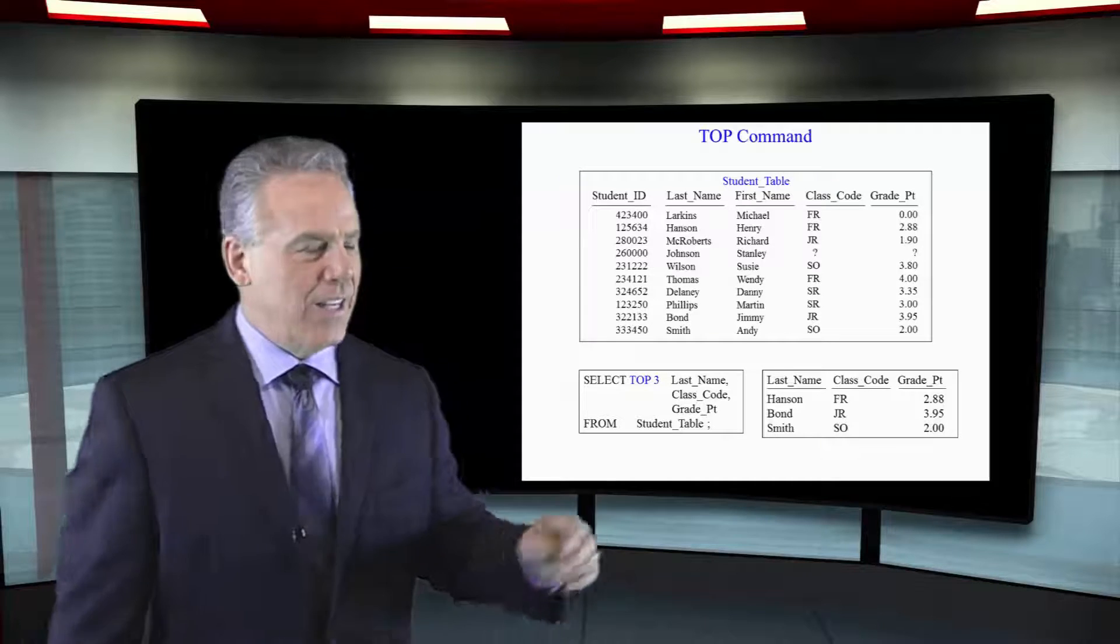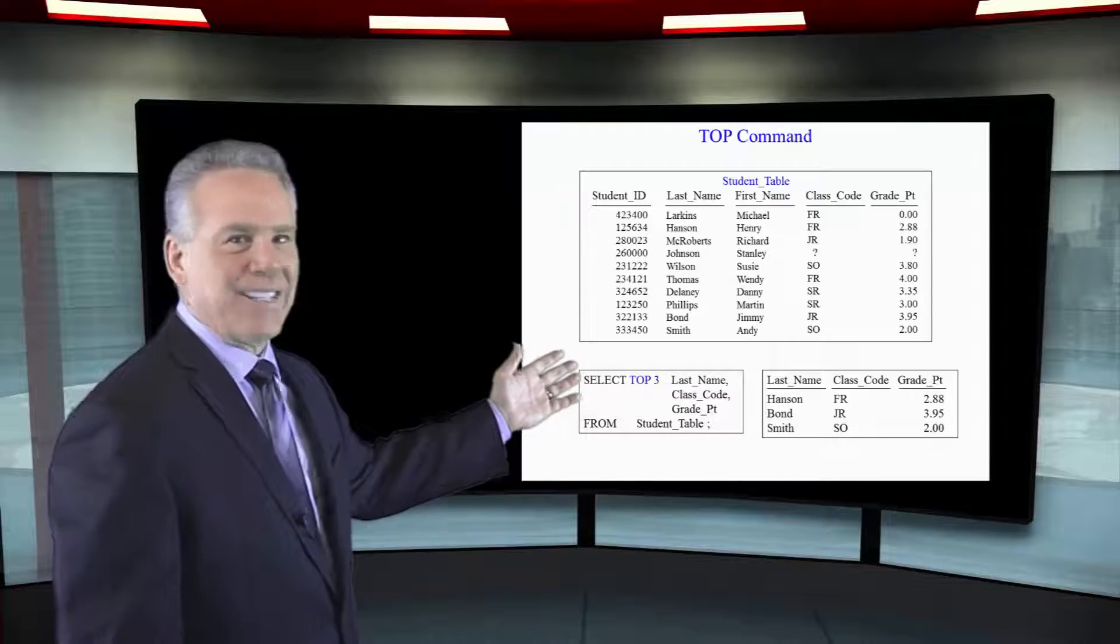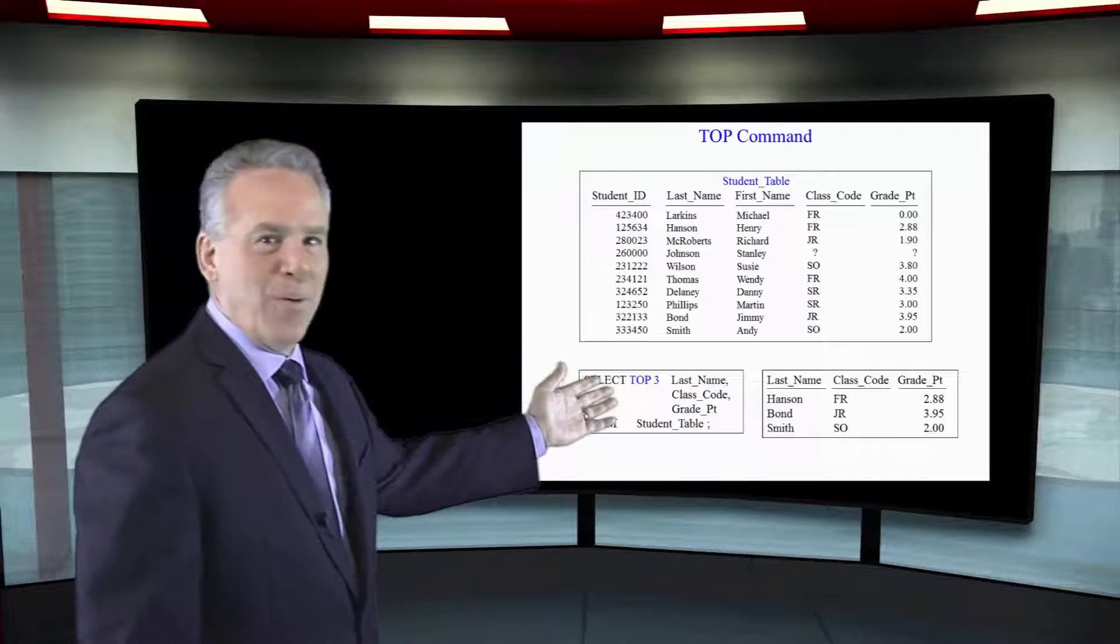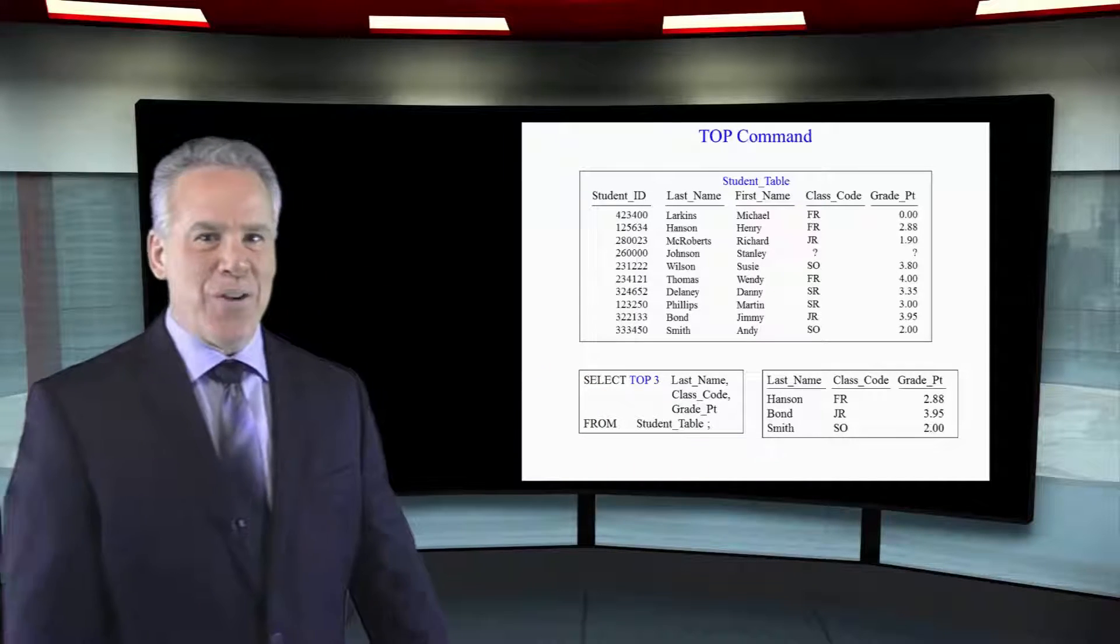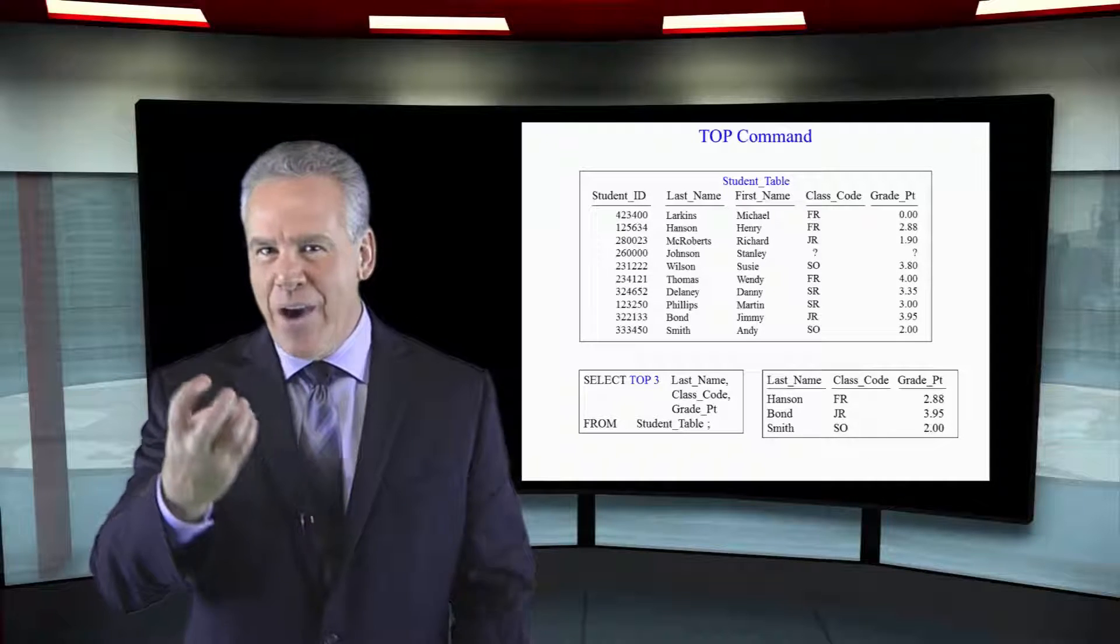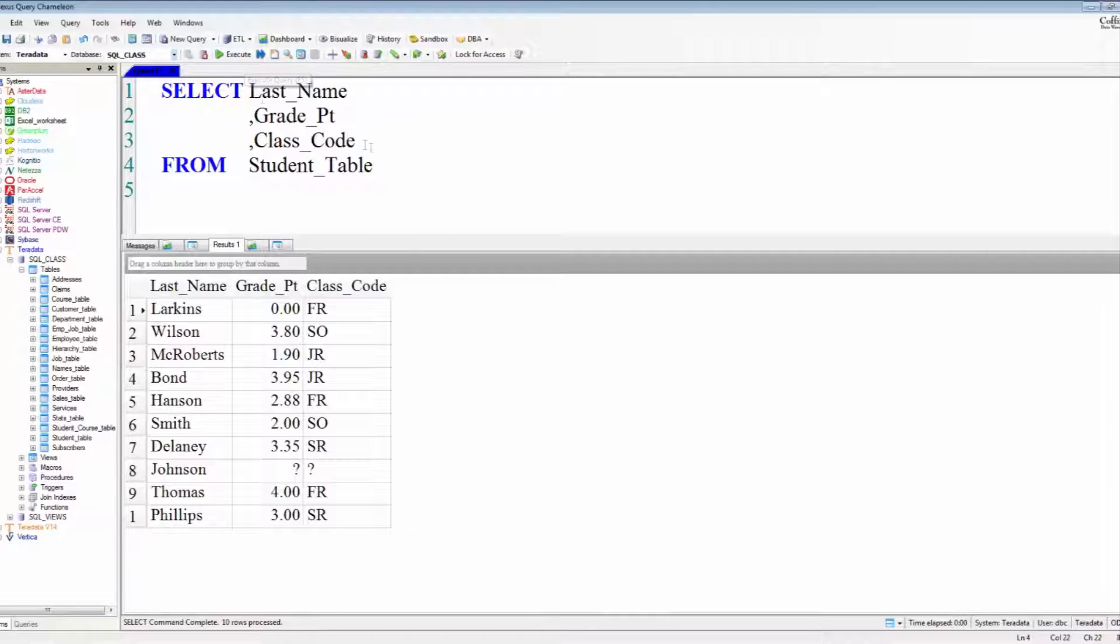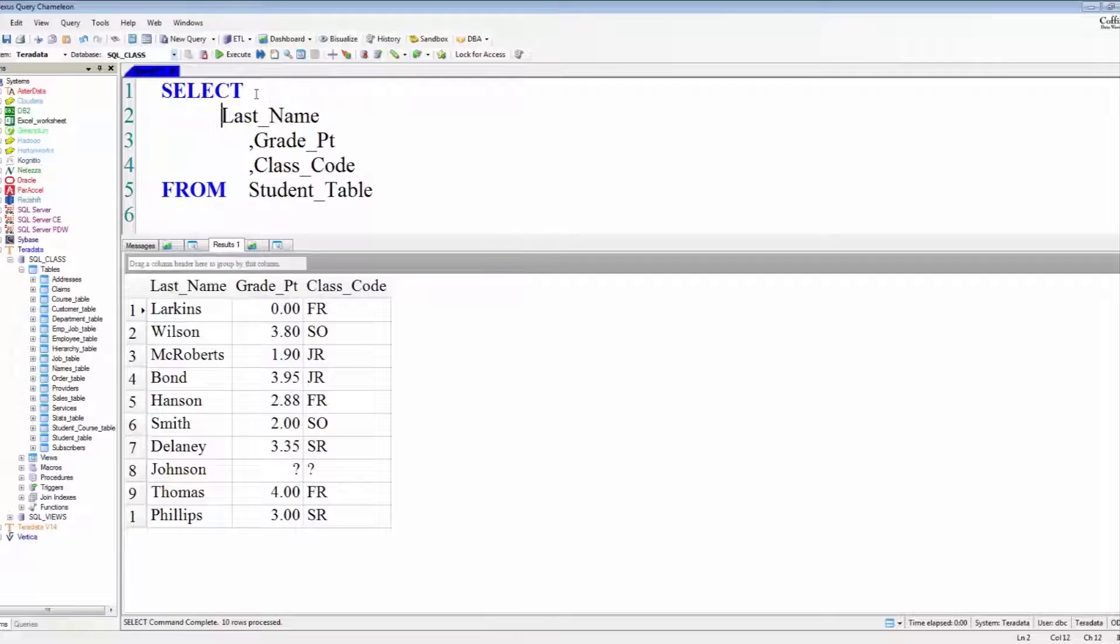Now, let's take a look at the query first, and it says, select top three, last name, grade point, class code from student table. I want you to take the top three out of the query in your mind, and you go, oh, this is like a normal query. Select last name, class code, grade point. I'm going to have three columns on my report. So you write your SQL exactly like you normally do.